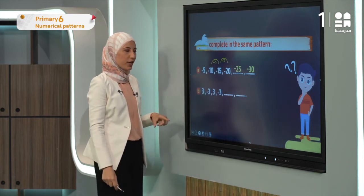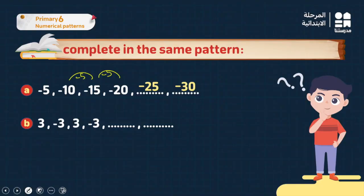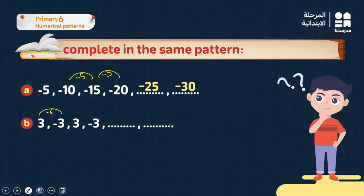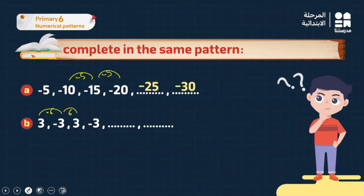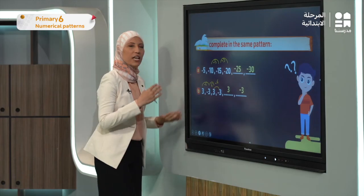Letter B: 3, negative 3, 3, negative 3. The pattern alternates: I add negative 6 to get negative 3, then add positive 6 to get 3 again. So alternating between adding negative 6 and positive 6. The pattern continues: 3, negative 3, 3, negative 3.